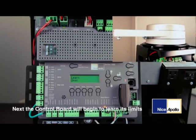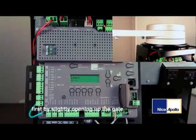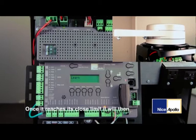Next, the control board will begin to learn its limits, first by slightly opening up the gate, then turn around and close the gate all the way to its closed limit. Once it reaches its closed limit, it will then reopen the gate until it reaches its open limit.